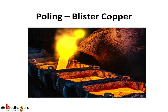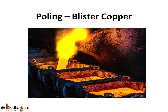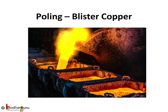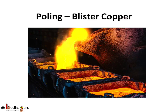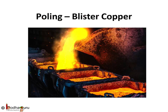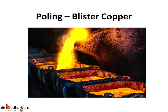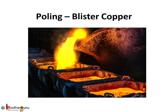In the case of blister copper, the molten metal is stirred with logs of green wood, or wooden poles. Impurities either escape as gases or they form slag over the surface of the molten metal. As this process involves the use of wooden poles, it is called the poling process.